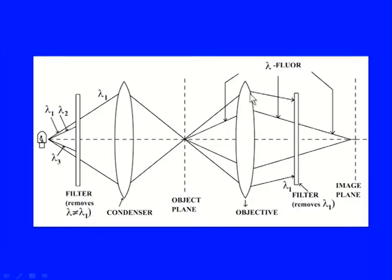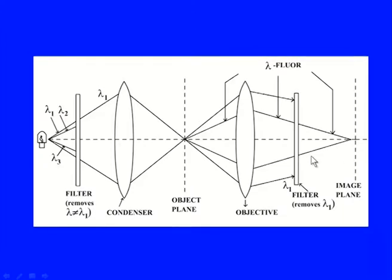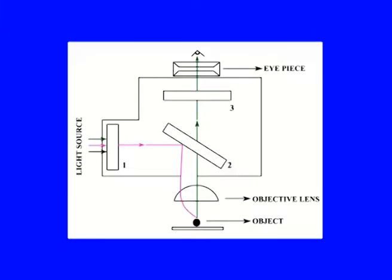After the objective lens, a second optical filter has been placed which does not allow the excitation wavelength but only allows the emission wavelength to pass through. This optical filter is different from optical filter number one, and finally you get an image in the image plane. However, epifluorescence microscopes are mostly used rather than this simple arrangement.